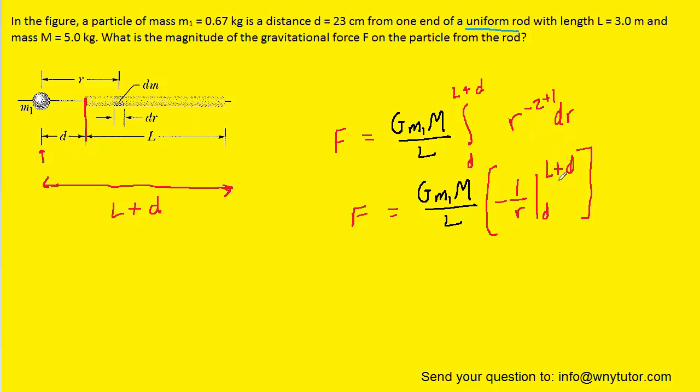So, we'll go ahead and plug in the upper limit first in for r. So, we would have negative 1 over L plus d. And then, we would subtract the expression we derived from plugging in the lower limit. So, that's going to be negative 1 over d. Now, of course, this will become plus 1 over d. So, we can fix that up. And this is all still multiplied by that constant in front.